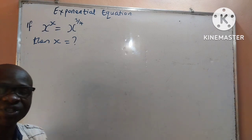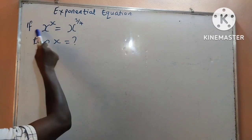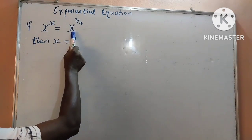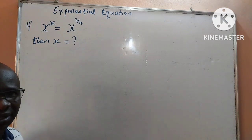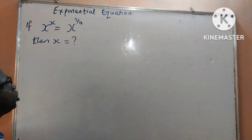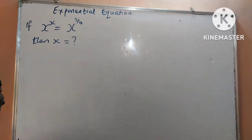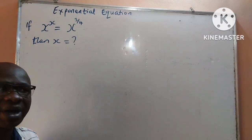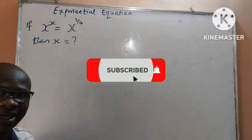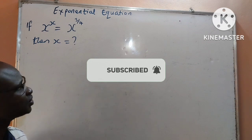The question that we shall be solving today is: if x to the power of x is equal to x raised to power 3 over 4, then what should be the value of x? I encourage you to watch the video till the end, and if it is your first time stopping by, kindly subscribe to my channel for exciting videos.